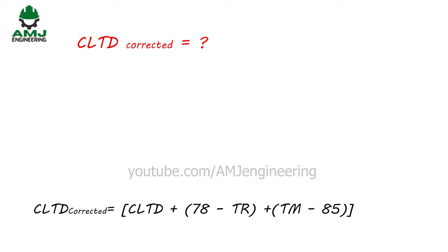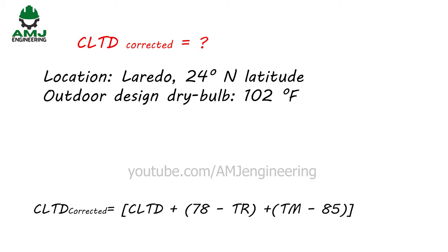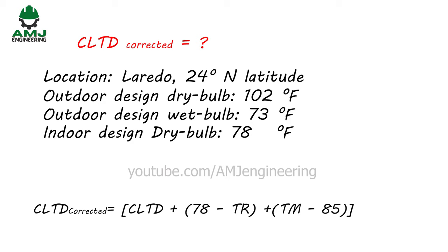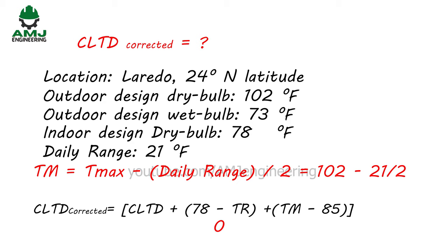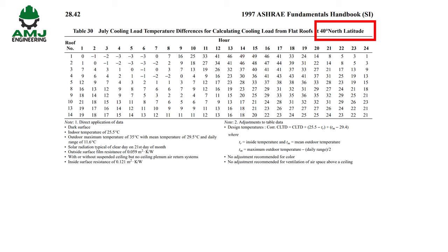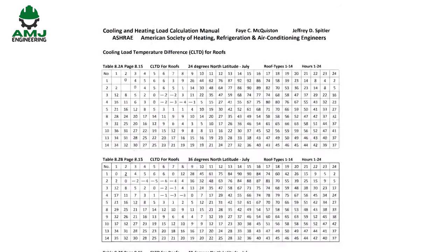Our first step is calculation of the CLTD correction using the given design conditions: Laredo at 24°N latitude; outdoor design dry bulb 102°F; outdoor design wet bulb 73°F; indoor design dry bulb 78°F; daily range 21°F. Since interior design temperature is 78°F, the term (78 − TR) = 0. TM = 102 − 21/2 = 91.5°F. Therefore CLTD_corrected = CLTD + 6.5. Note that the ASHRAE 1997 handbook contains CLTD tables for July at 40°N latitude.